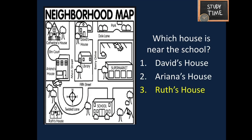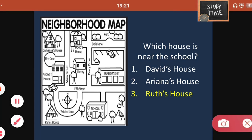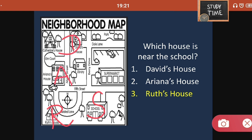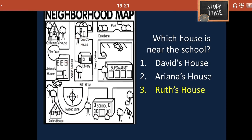Which house is nearest to the school? Here is the school. This is Ruth's house, this is David's house, and this is Ariana's house. So which is nearer? Ruth's house is nearer — so that is the answer.